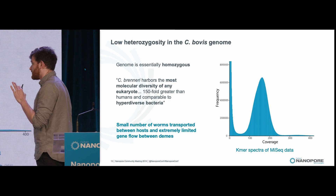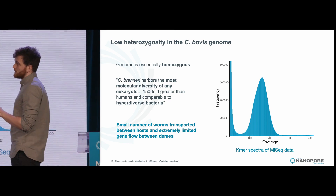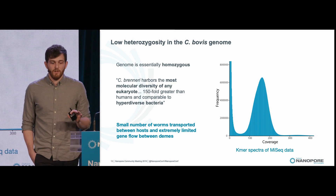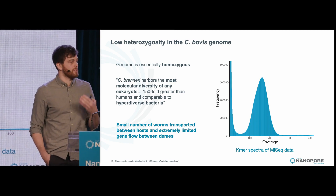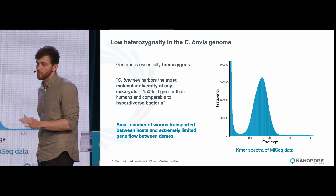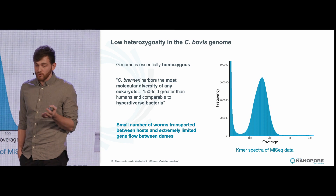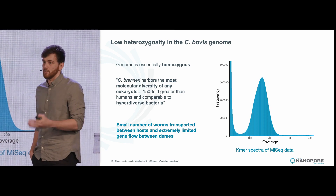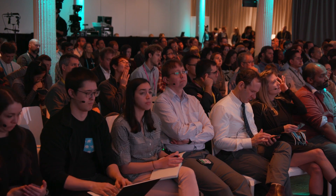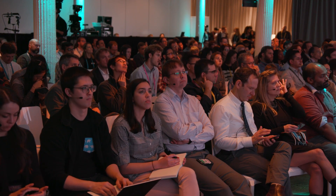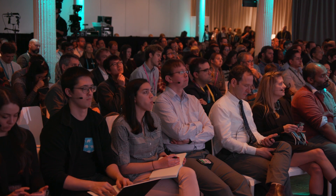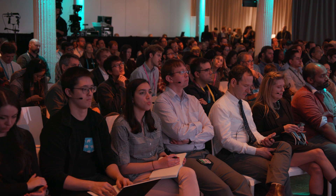Something else we realized straight away when working with this data is that the genome of C. bovis is essentially homozygous — there's almost no heterozygosity. This is extremely surprising because Caenorhabditis species are known to have some of the highest levels of nucleotide diversity of any known eukaryote, which usually makes assembly pretty tricky. The fact that the C. bovis genome is so homozygous suggests that a very small number of worms are being transported from ear to ear, and that gene flow between distinct demes is pretty rare, leading to this incredibly inbred genome.